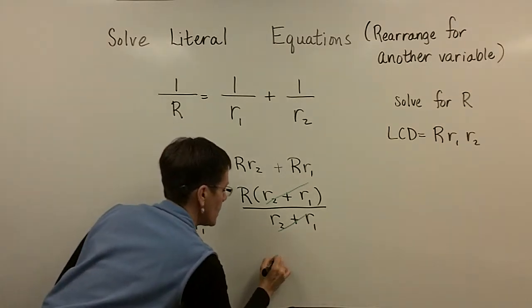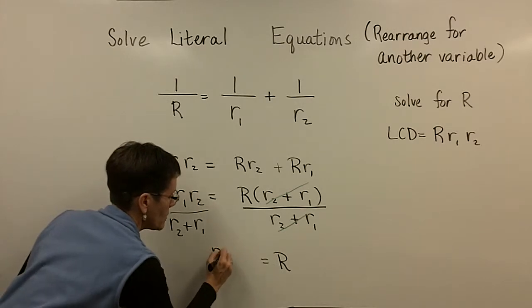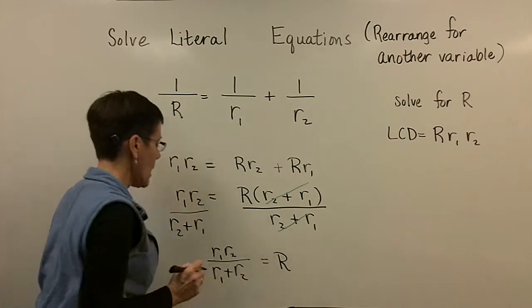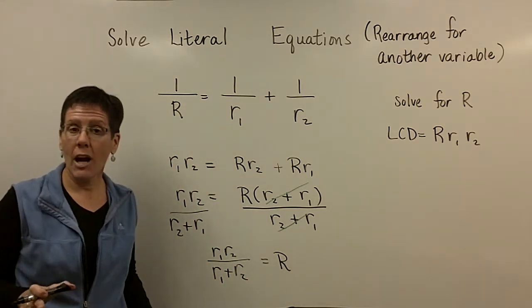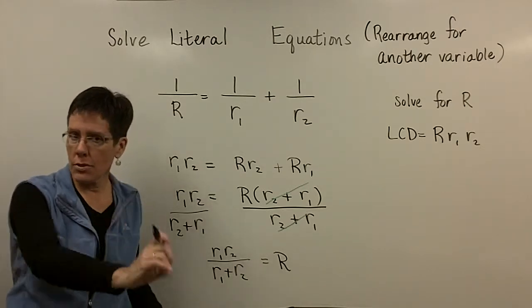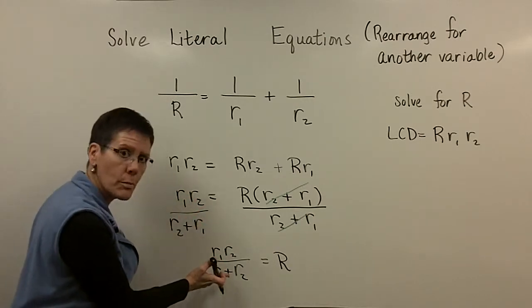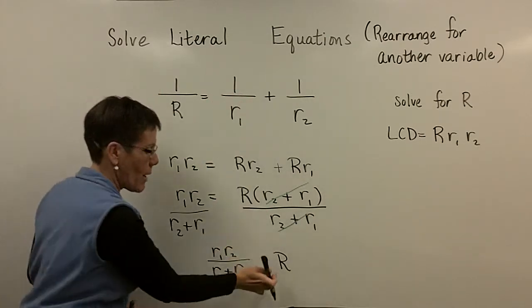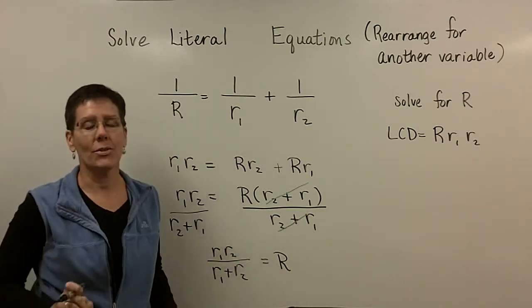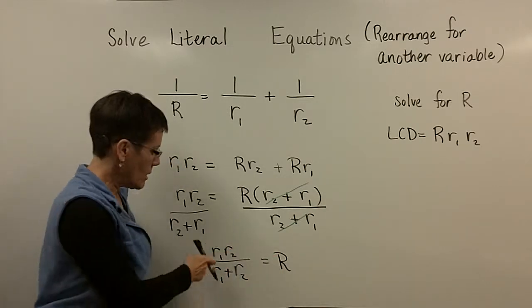The total resistance is found by taking the product of the resistors divided by the sum of the resistors — I'll put R1 first and R2 second. I've rearranged this formula for R. When I repetitively want to calculate total resistance for two resistors in parallel knowing R1 and R2, I'll just use this formula instead of the original one, which is a lot harder to use directly.